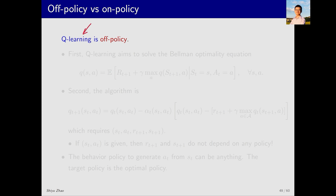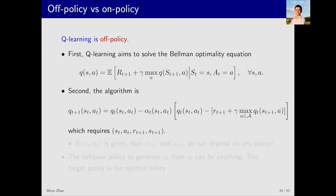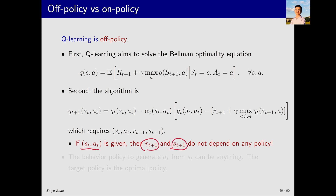Now let's look at Q-learning — it is off-policy, unlike SARSA and Monte Carlo which are both on-policy. From the first perspective, Q-learning aims to solve the Bellman optimality equation, which does not involve any specific policy (or only involves the optimal policy). From the second perspective, Q-learning requires samples s_t, a_t, r_{t+1}, and s_{t+1}. Given s_t and a_t, the values r_{t+1} and s_{t+1} do not depend on any particular policy — they are determined by p(r|s,a) and p(s'|s,a).